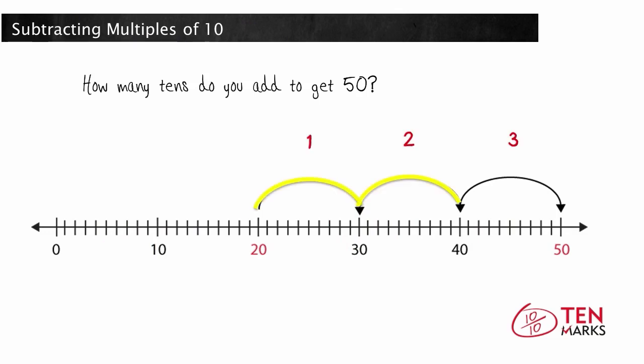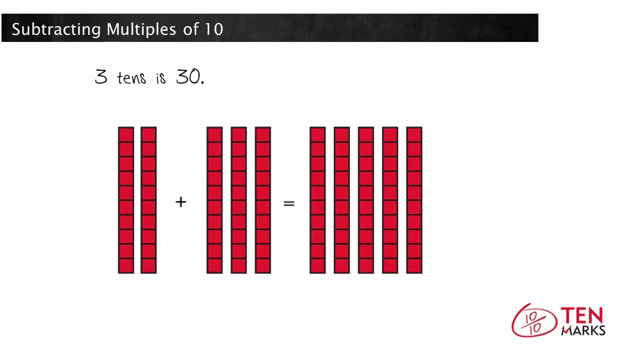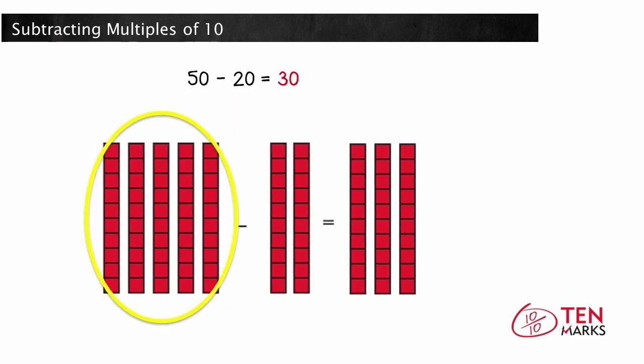1, 2, 3. You add 3 tens. 3 tens is 30, so 50 take away 20 equals 30.